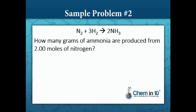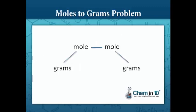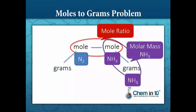Sample problem number two — we're going to use the same equation. How many grams of ammonia are produced from two moles of nitrogen? So we want grams of ammonia from two moles of nitrogen. Our wanted is grams of ammonia and our given is two moles of nitrogen, again in three sig figs. We're going to convert moles of nitrogen to moles of ammonia, and then get grams of ammonia by multiplying by the molar mass of ammonia.